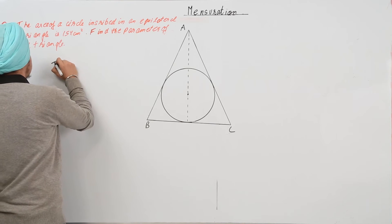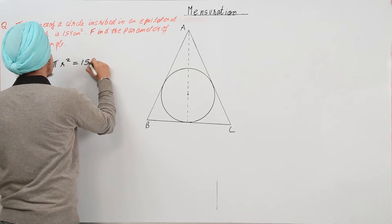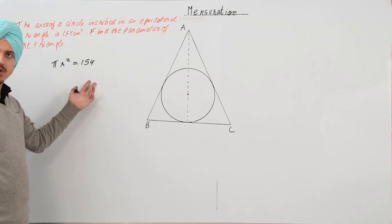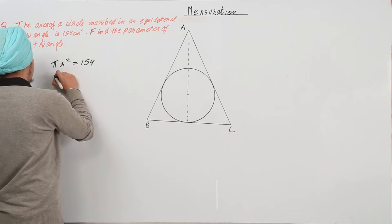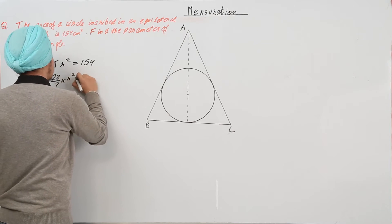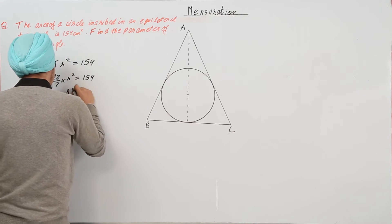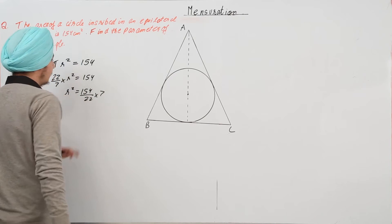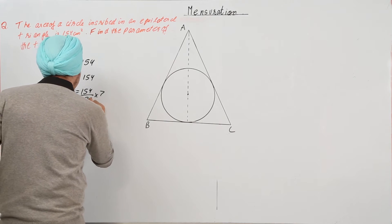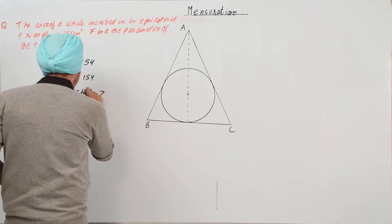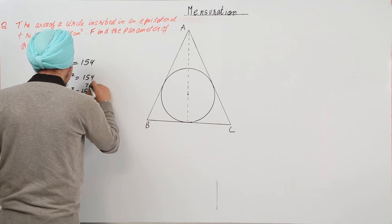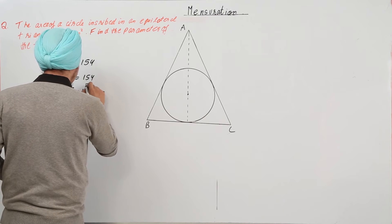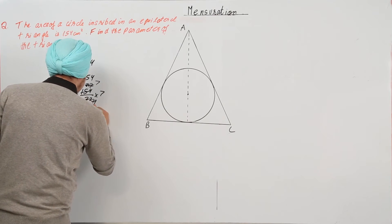We have the area, that is πr² = 154 cm². So we can write 22/7 × r² = 154, which gives us r² = 154 × 7/22.